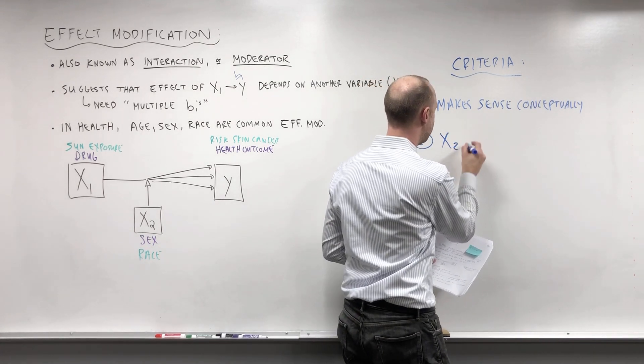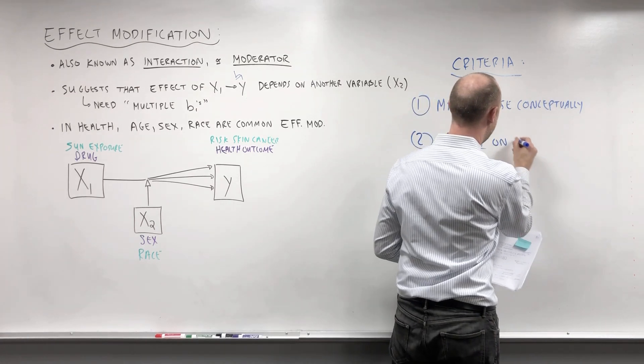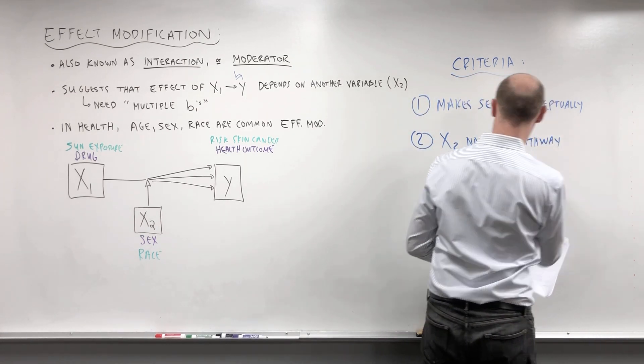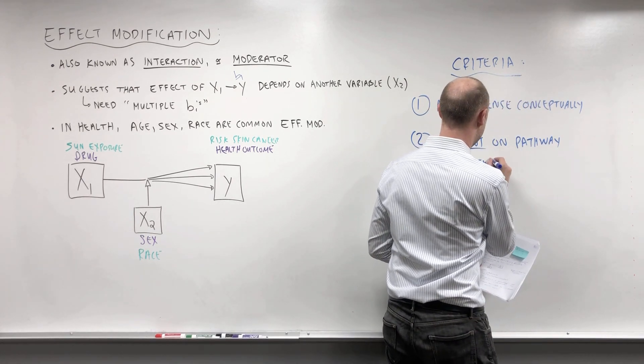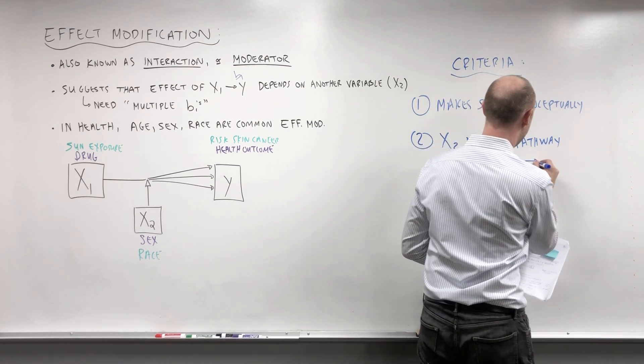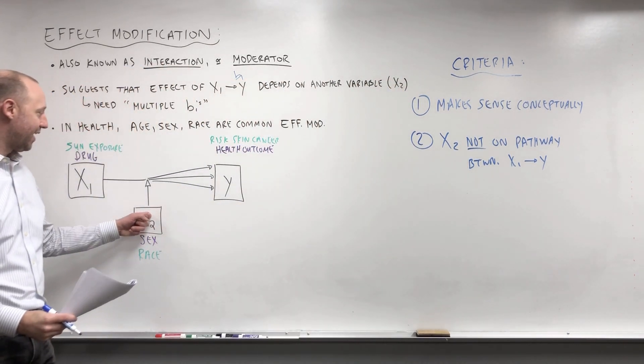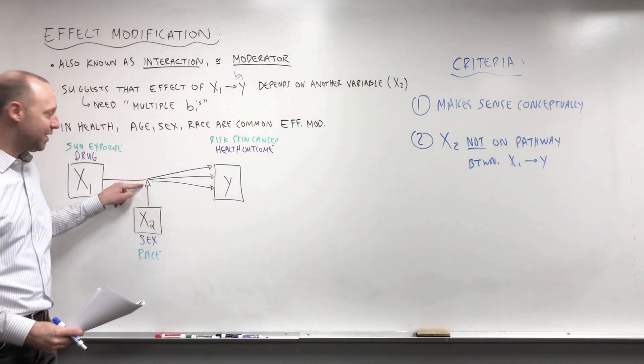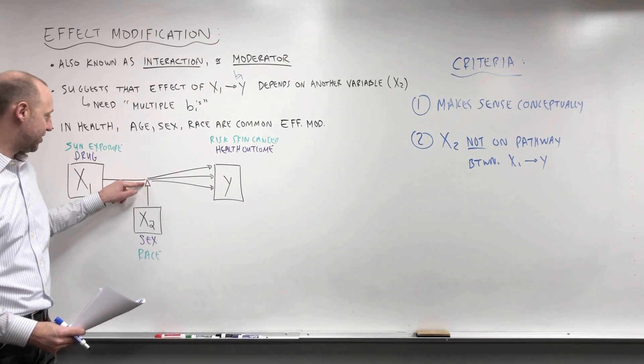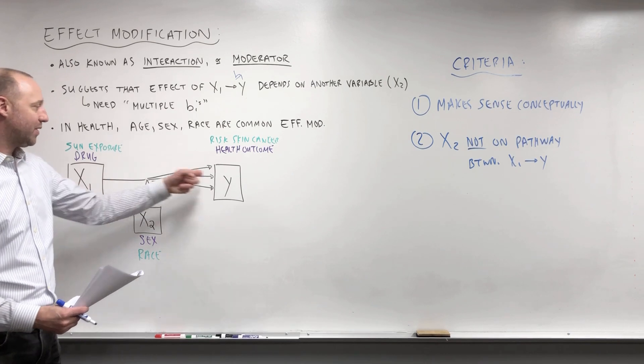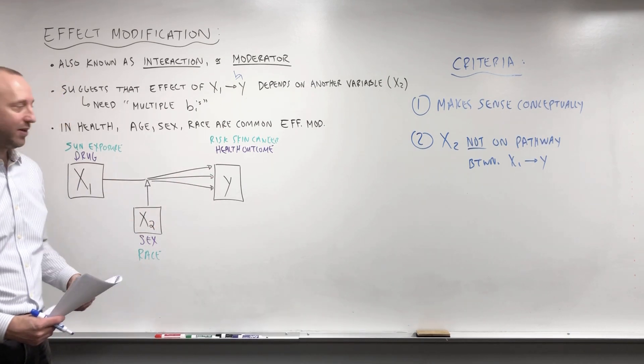Second criteria, that x2 is not on the pathway between x1 and y. So I've tried to draw this diagram carefully to indicate x2 is not sitting in the middle there. It's not mediating the relationship. It's just changing it, right? The effect that x1 has and the outcome changes depending on x2.